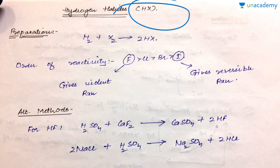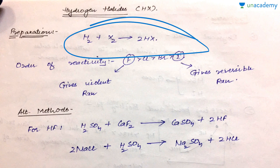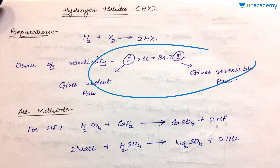The next important topic is hydrogen halides, represented by the general formula HX: HF (hydrofluoric acid), HCl (hydrochloric acid), HBr (hydrobromic acid), and HI (hydroiodic acid). These can be simply prepared by treating hydrogen with a halogen atom. The order of reactivity is: fluorine is most reactive and iodine is least reactive. Fluorine reacts so vigorously with hydrogen that it almost catches fire, while with iodine the reaction H₂ + I₂ is always reversible, requiring an oxidizing agent.